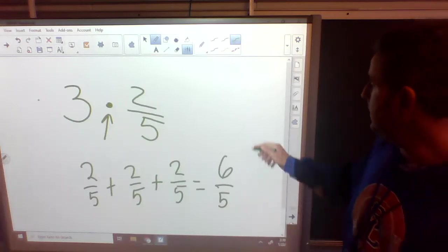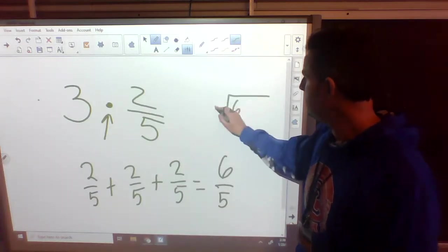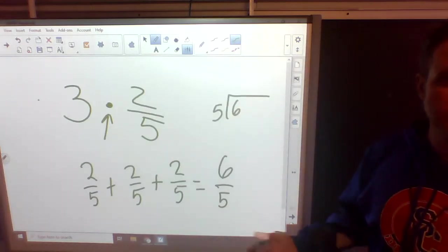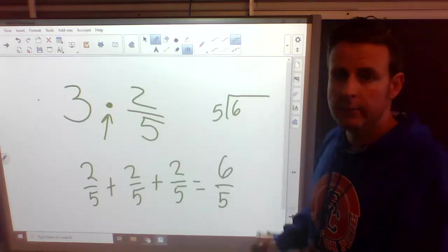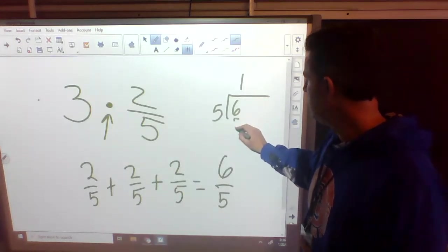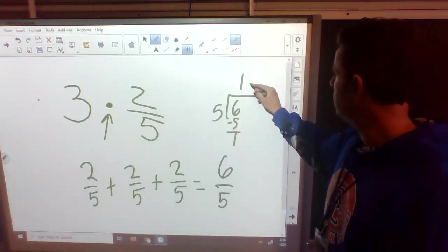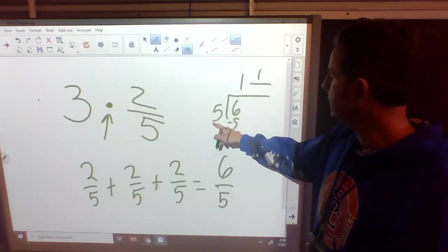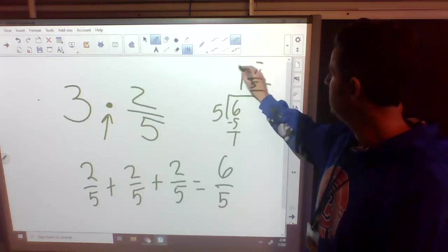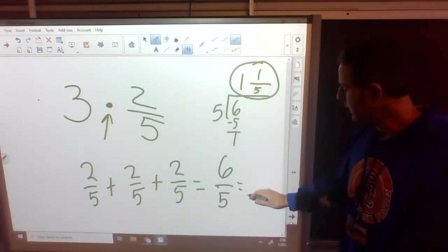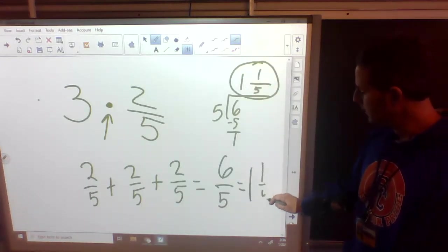It's an improper fraction. So we need to do 6 divided by 5 to turn it into a mixed number. 5 will fit into 6 one time. It is 5. We're left over with one piece that is still ours. We're going to put that one piece up top. What's our bottom number? Still 5. So our answer is 1 and 1 fifth.